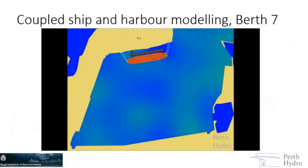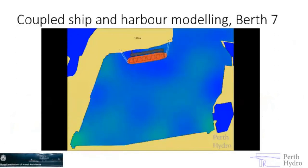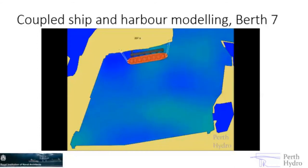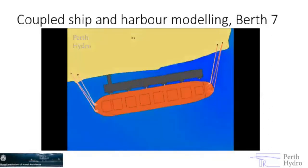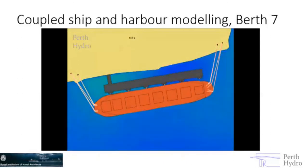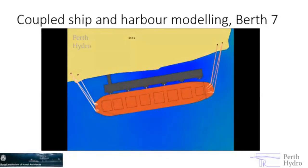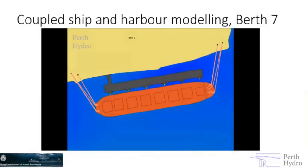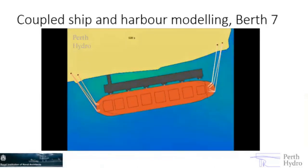Here's an example time domain simulation at Berth 7 using the coupled ship and harbour method. This simulation shows the waves within the harbour as calculated using WAMIT — it only shows long waves of 25 seconds and above, which makes it clearer to see what's happening. With all the different wave frequencies and directions within the harbour, it's a very complicated wave pattern. Zooming in to the ship's motions: when the mooring lines are under high tension they go red, and you can see the sway and yaw motions. The ship comes completely off the fenders sometimes, with high loads in the mooring lines.